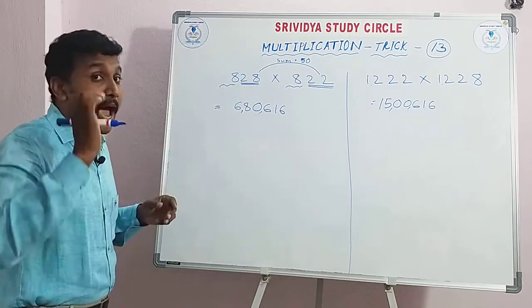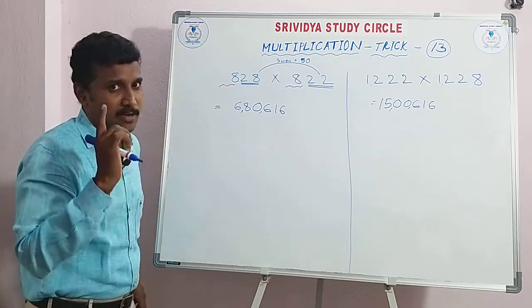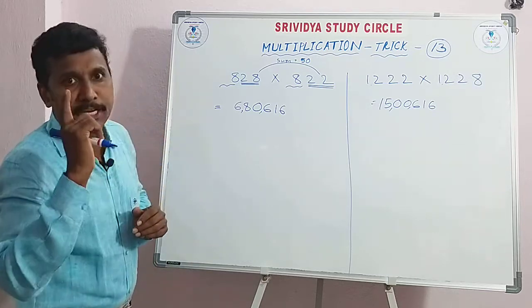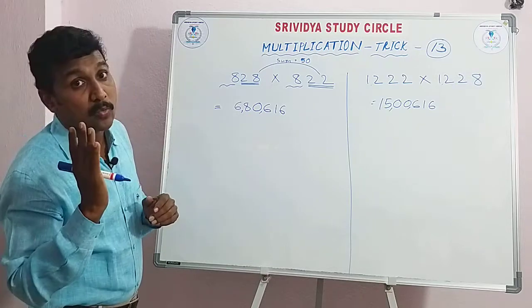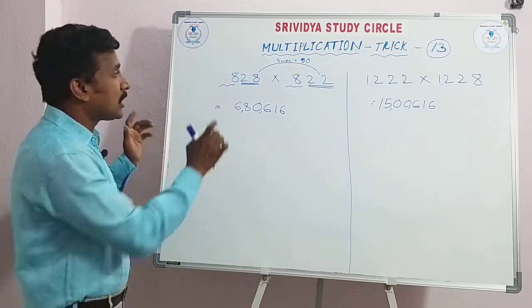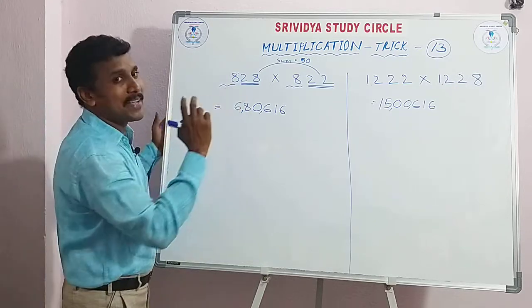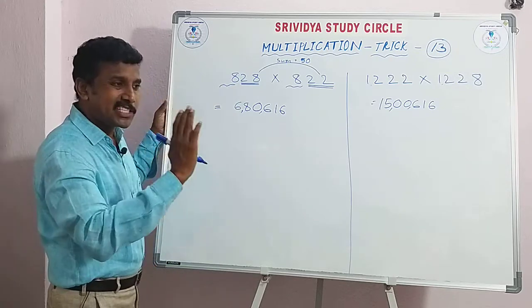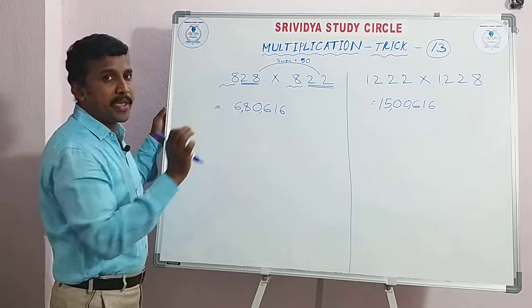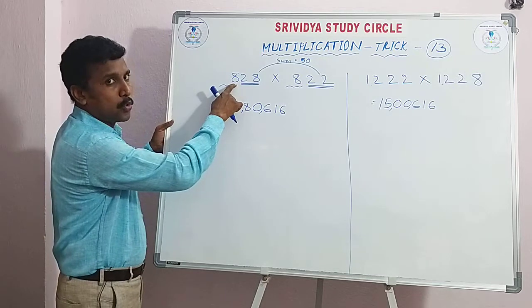The trick applied here is: eight squared plus eight divided by two. That gives 64 plus 4, which is 68. So the formula is: take the repeated digit, square it, then add half of it. Eight squared is 64, eight divided by 2 is 4, so 64 plus 4 equals 68.